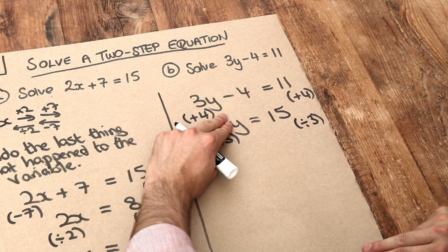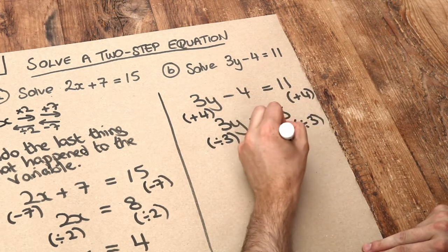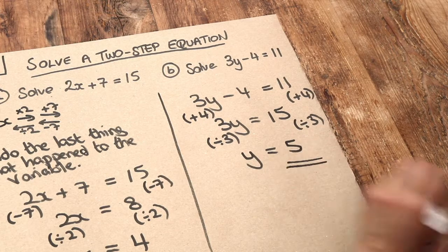Dividing by 3 gets rid of the times by 3, leaving y. And 15 divided by 3 is 5. That is the final answer.